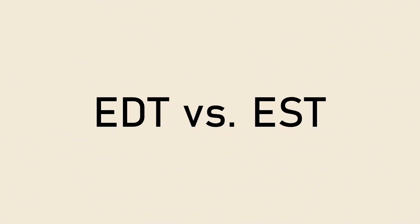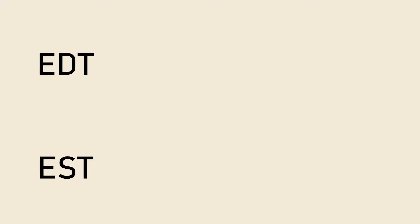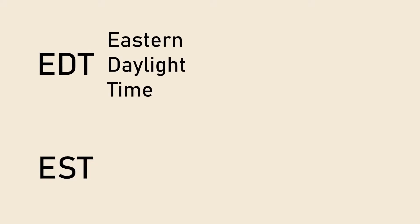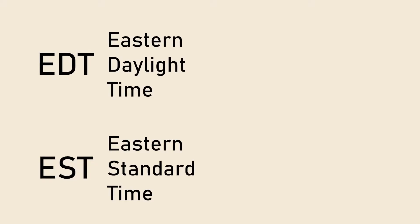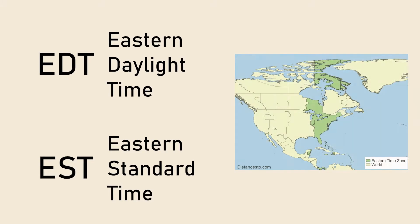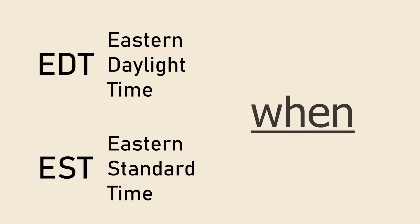EDT and EST are two abbreviations that seem to be completely interchangeable, but actually aren't. EDT stands for Eastern Daylight Time, while EST stands for Eastern Standard Time. Both are used to tell the time in the same parts of the US and Canada, but the real distinction is not where they're used, but when.